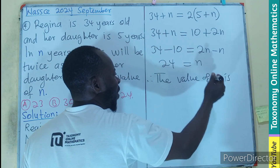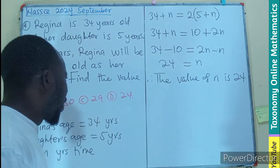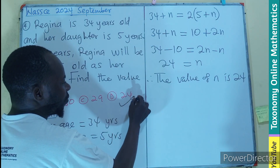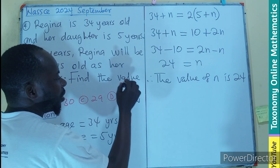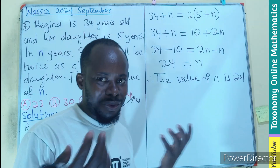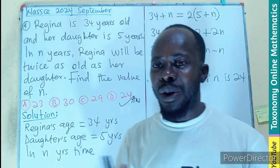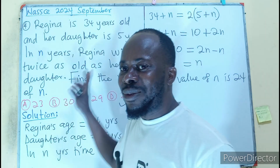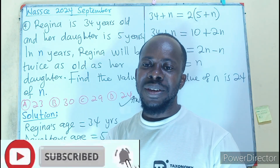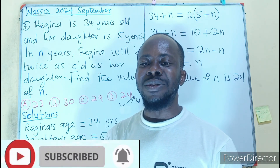Therefore, the value of n is 24, and that will be option D from the possible answers. I'm sure you've got a gist of how we maneuvered to get 24. Thanks for watching — like, share, comment, and subscribe.